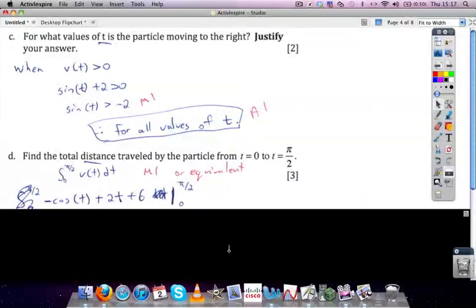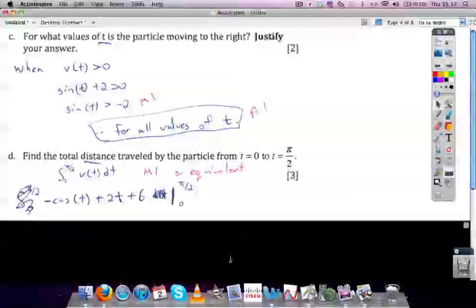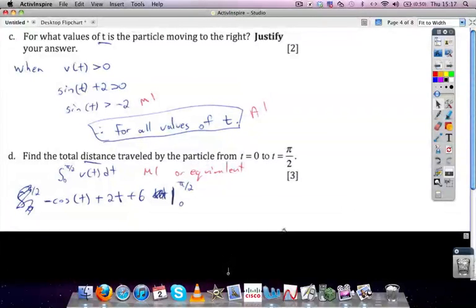When you take the integral of the velocity function of sine t plus 2, you get minus cos t plus 2t plus some constant. In this case, we found it to be 6. Evaluate that at pi over 2 and at 0.